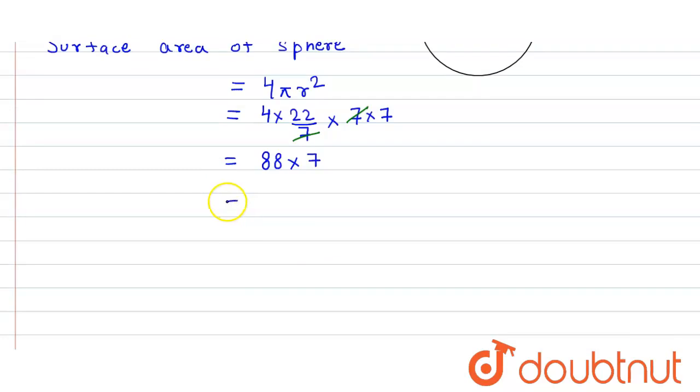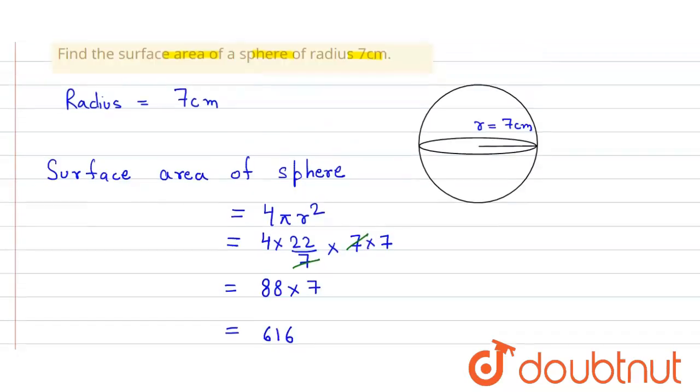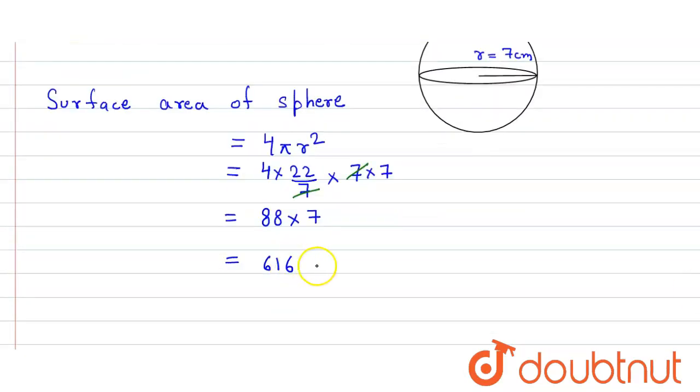So here we get is equal to 4 into 22 is 88 into 7. So here when we multiply here we get 616 and the unit is centimeter square. So that's our answer.